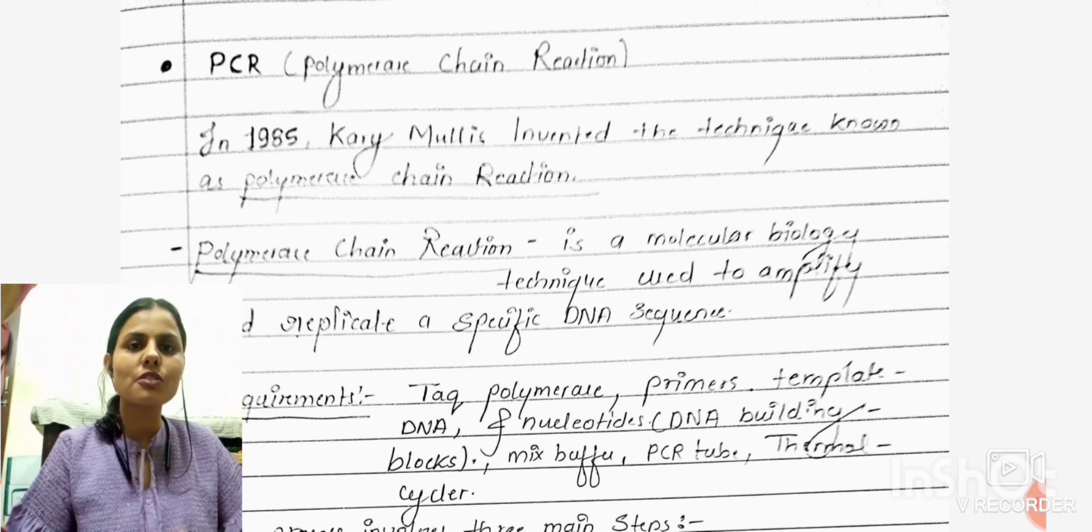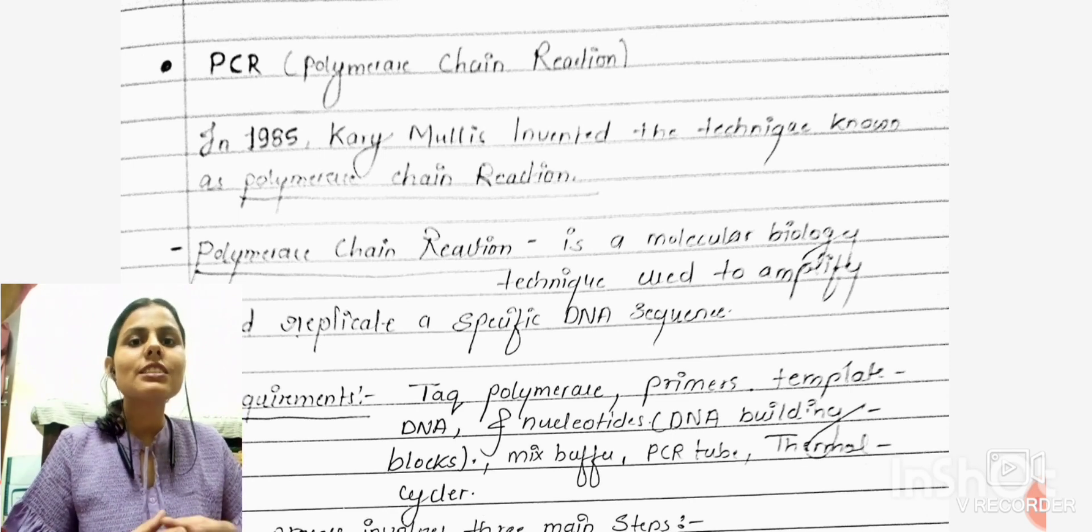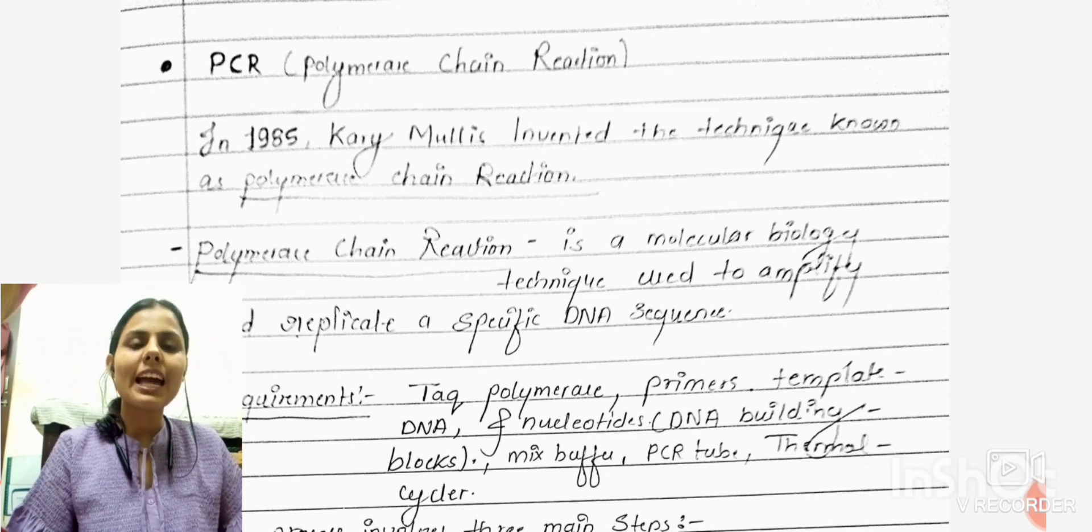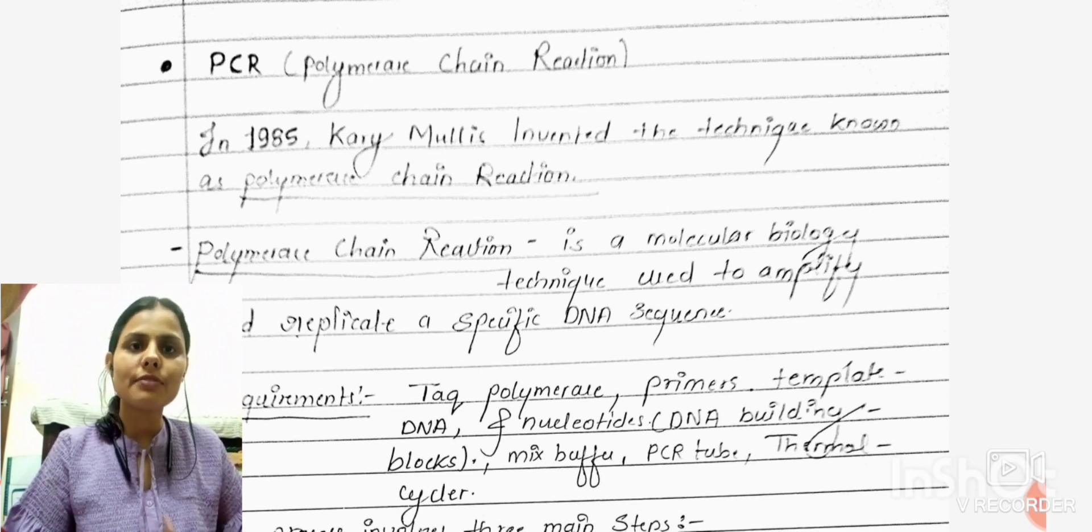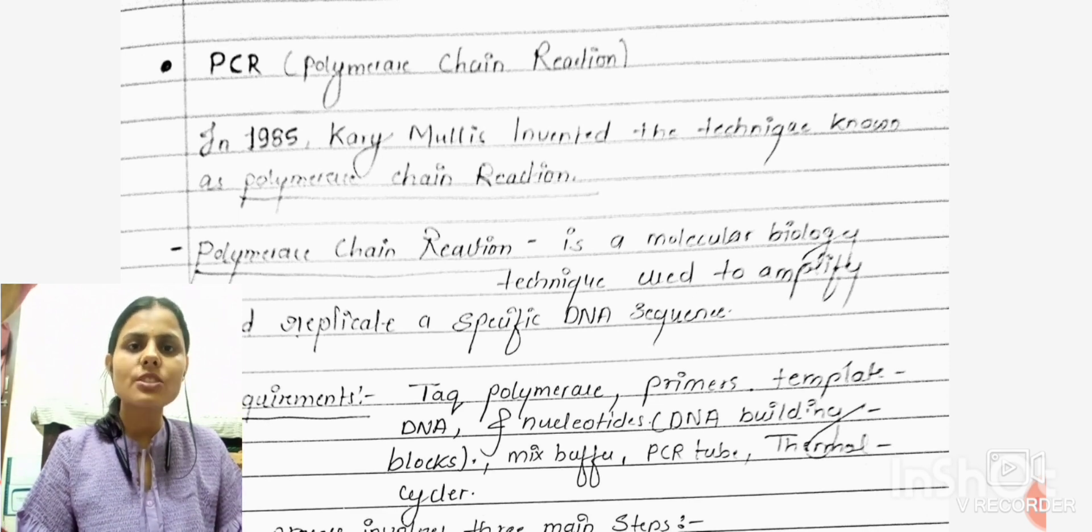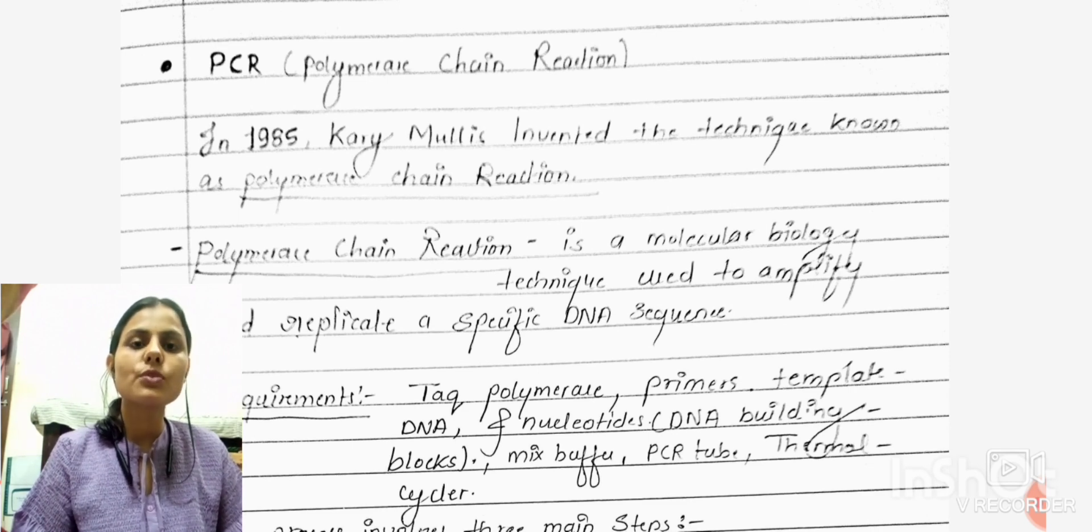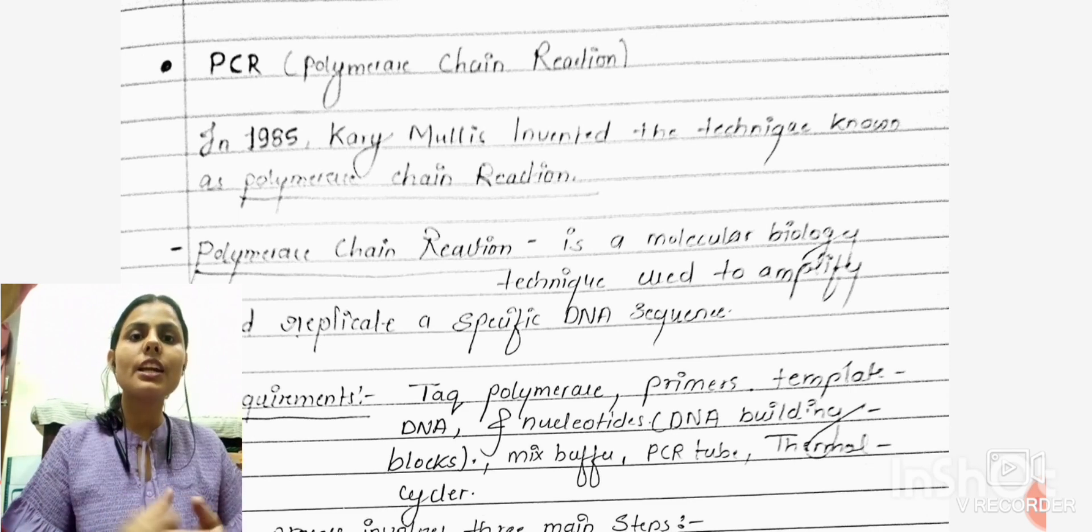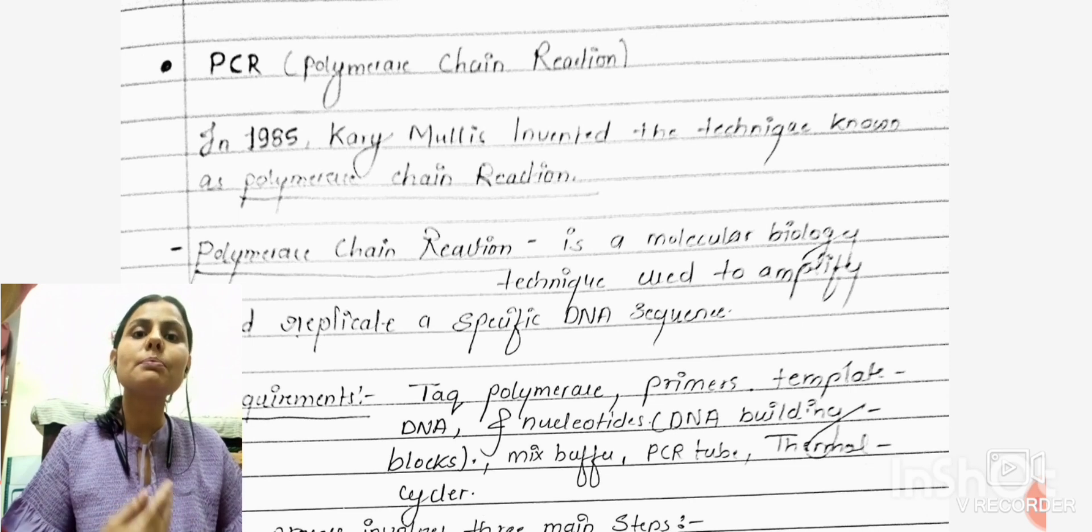Starting with the topic, this technique was invented by Kary Mullis in 1985 and is known as PCR, which stands for Polymerase Chain Reaction. Polymerase Chain Reaction is a molecular biology technique that is used for the amplification of DNA. We can create multiple copies by using PCR technique.